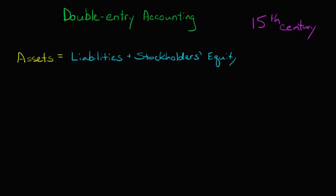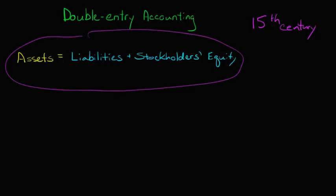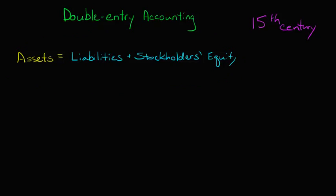What double-entry accounting is, is basically saying that for each entry we make there's a corresponding entry, so that our basic accounting equation always remains equal. We always want the left side to equal the right side. This is something that might be a little bit easier to illustrate in principle.